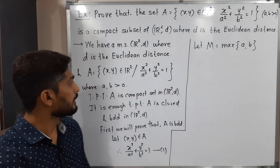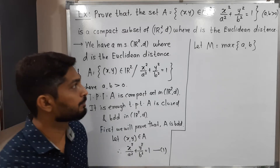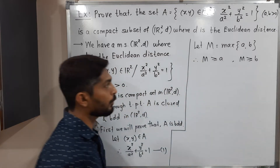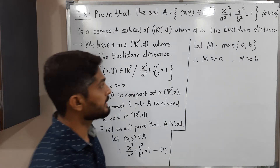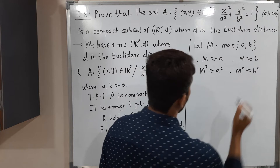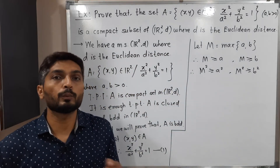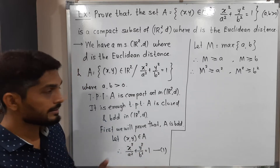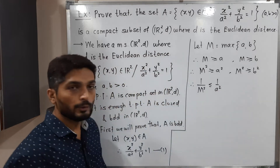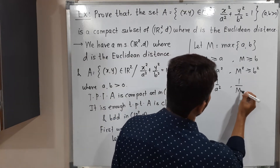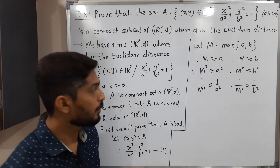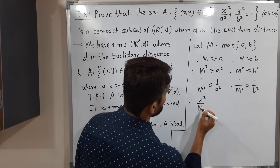Since a and b are positive real numbers, M is positive, and M ≥ a and M ≥ b. Taking squares: M² ≥ a² and M² ≥ b². Taking reciprocals (which reverses the inequality): 1/M² ≤ 1/a² and 1/M² ≤ 1/b². Multiplying the first by x² and the second by y²: x²/M² ≤ x²/a² and y²/M² ≤ y²/b².